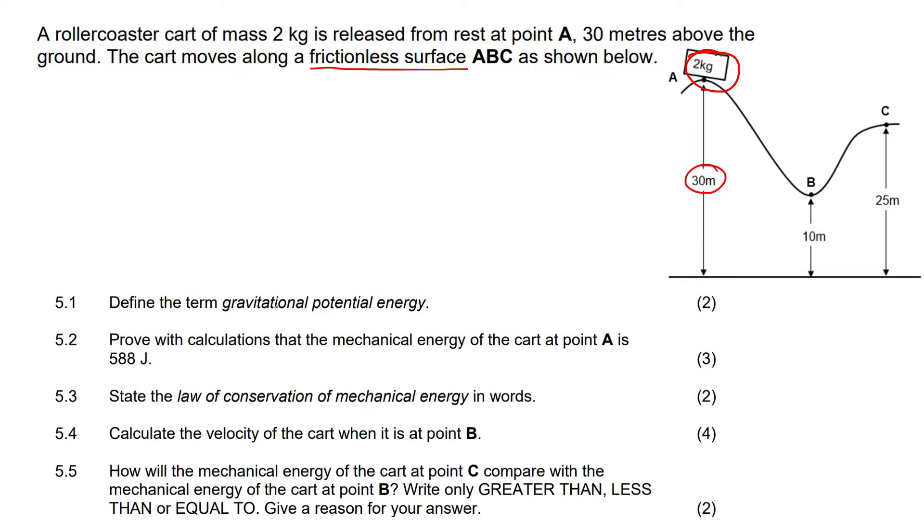The first question says, define the term gravitational potential energy. So, before we give the definition, do we know the formula for potential energy? Well, potential energy on our formula sheet is MGH, where M stands for the mass, G on planet Earth would be 9.8, and H is height. So, the definition is the energy of an object due to its position, or you could even say height, above the ground.